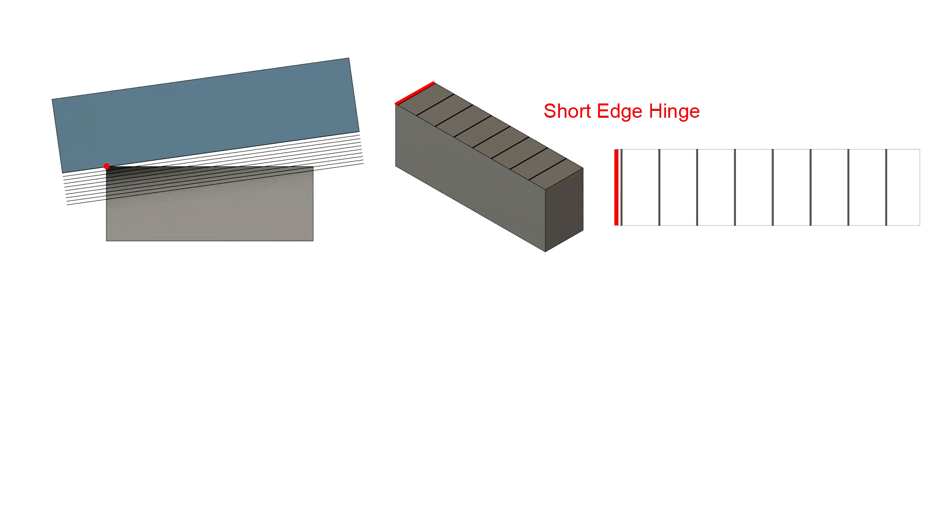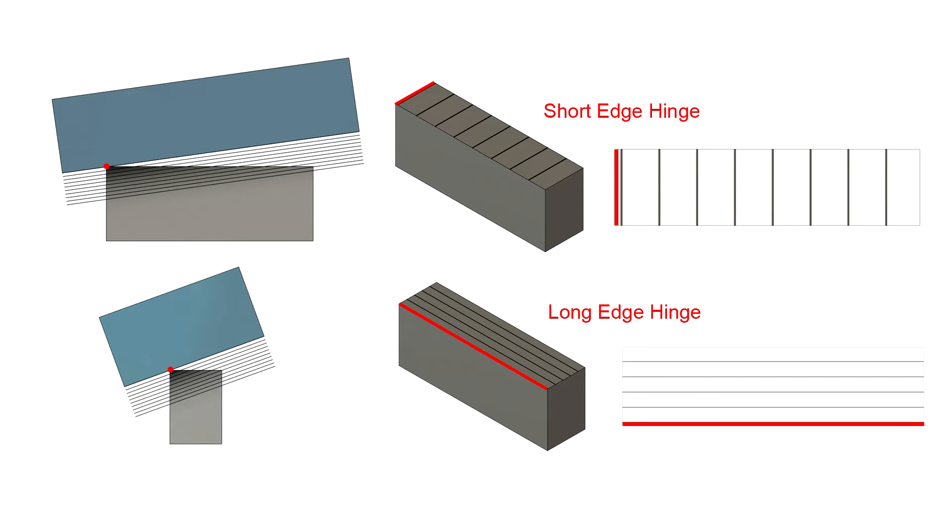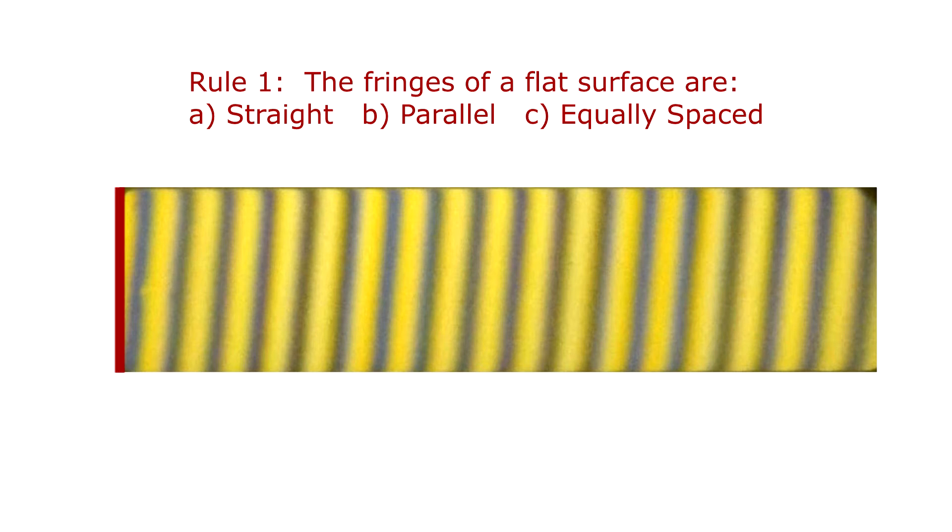Here's a CAD model and fringe pattern for a perfectly flat gauge block with the hinge along the short edge, and here the hinge is along the long edge. We get the same result with a near-perfect gauge block under a monolite. Here the hinge is along the short edge. As we change the wedge angle, the number of fringes changes, but in all cases, the fringes for a flat surface have three characteristics, which we'll call rule 1. The fringes generated by a flat surface are straight, parallel, and equally spaced. Any deviation from these criteria indicates an error in flatness.